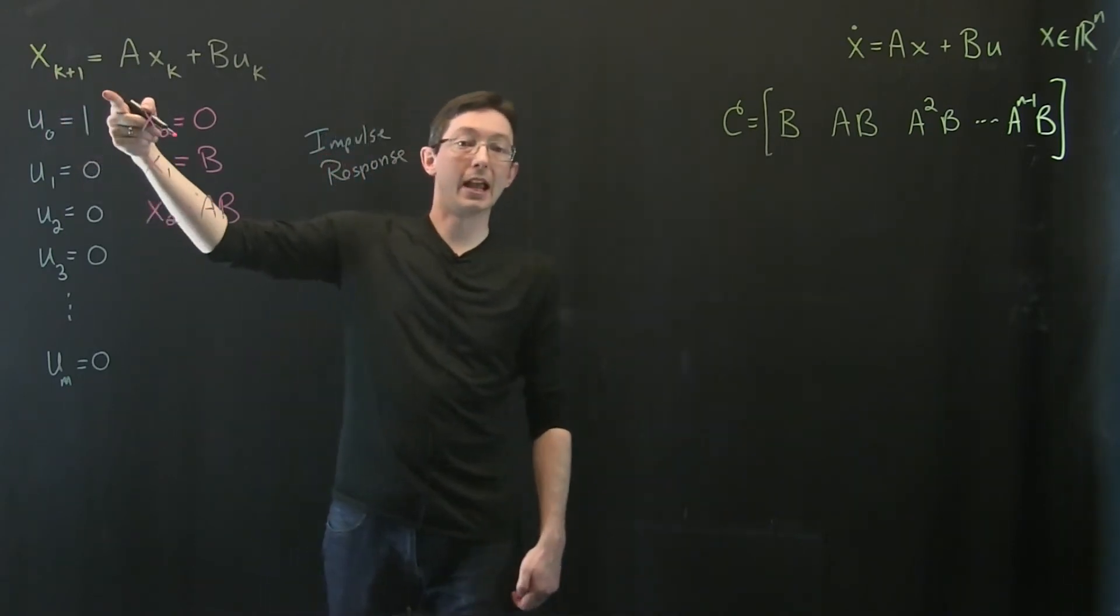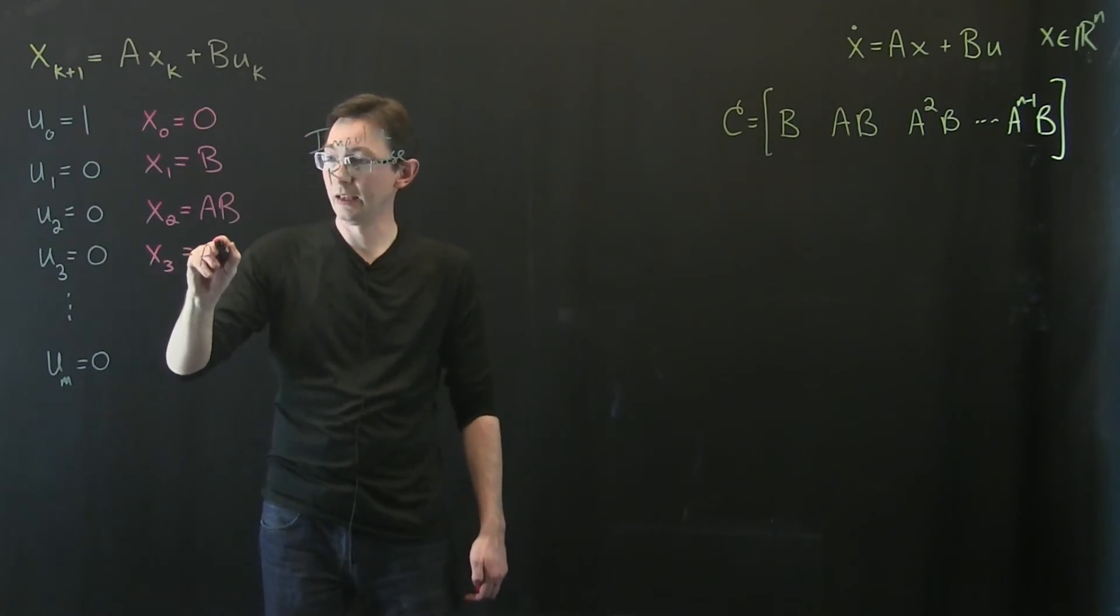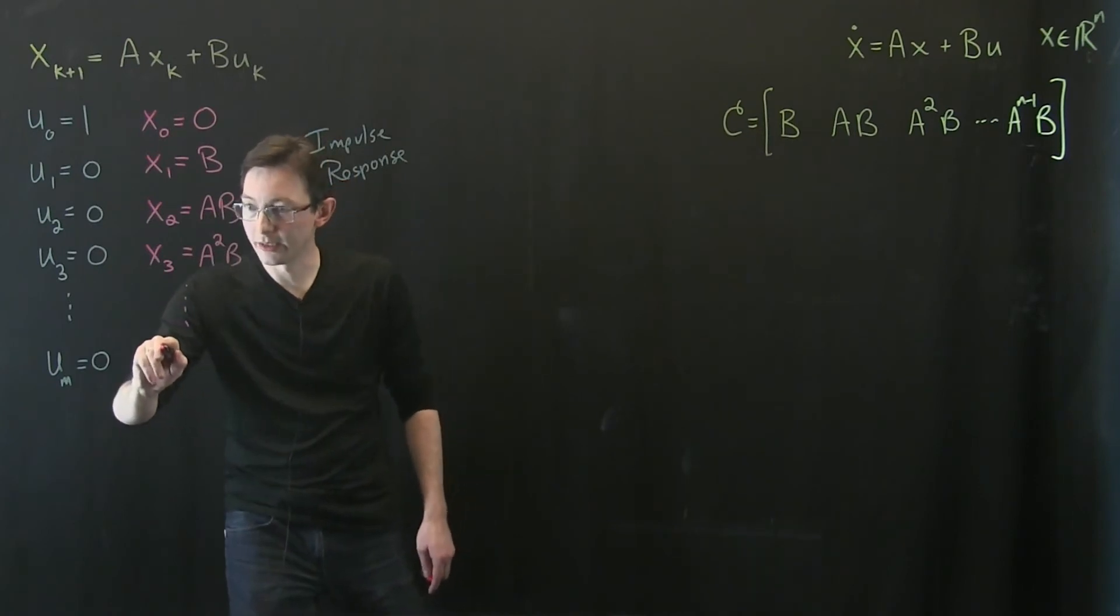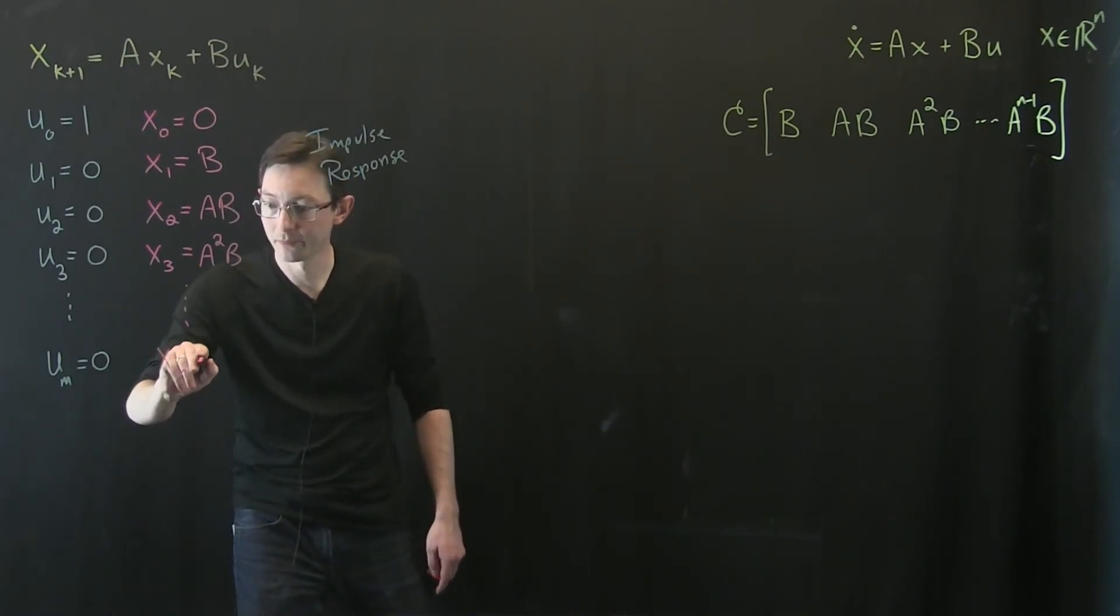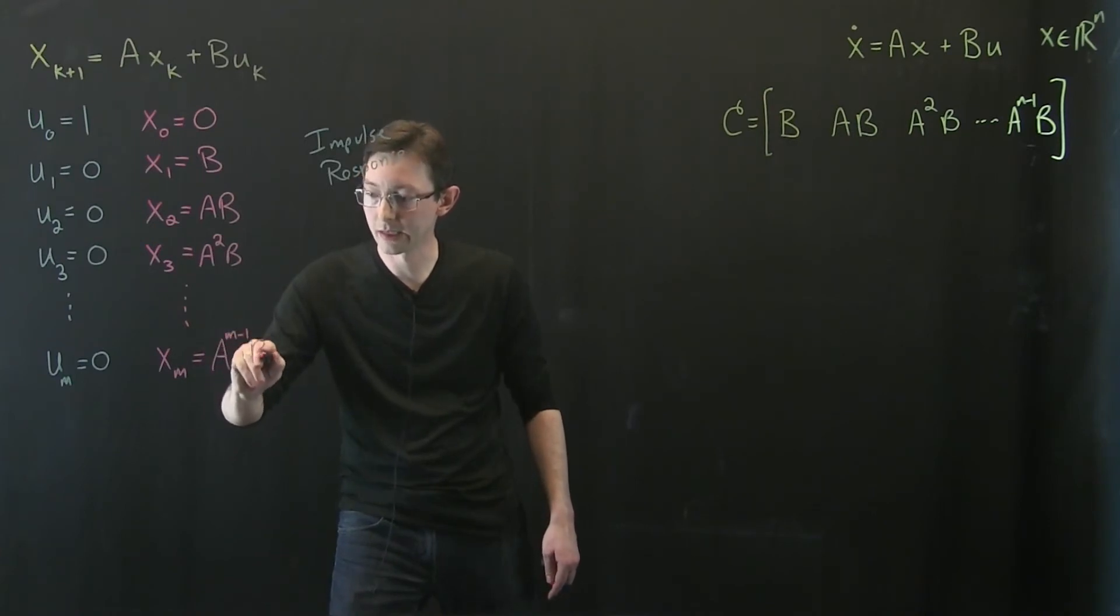x3 is just a times x2. x3 is just a times x2 so it's a squared b. And so on and so forth. So all the way down here at x_m this equals a to the m minus 1 times b.